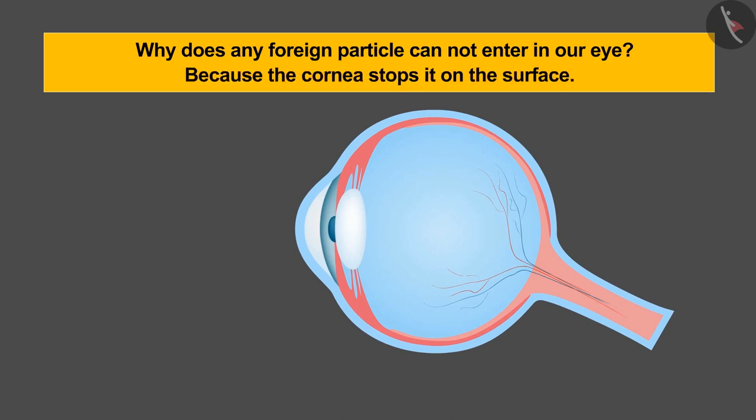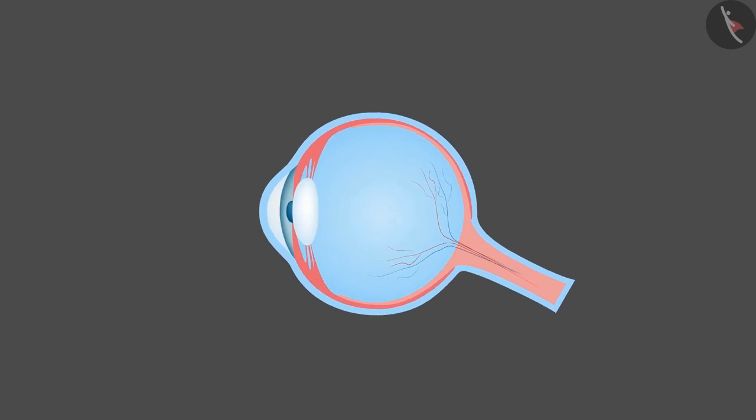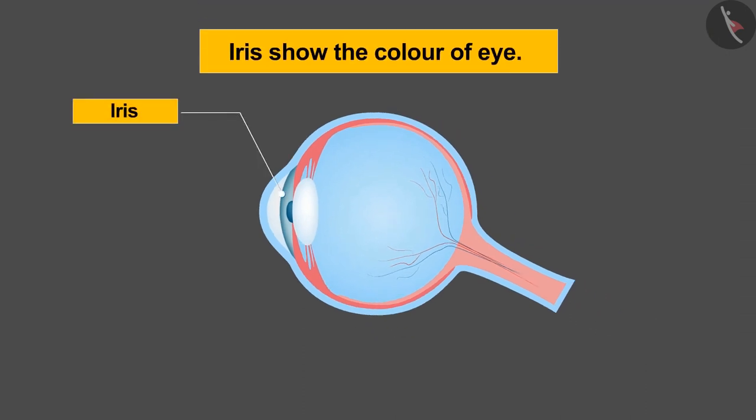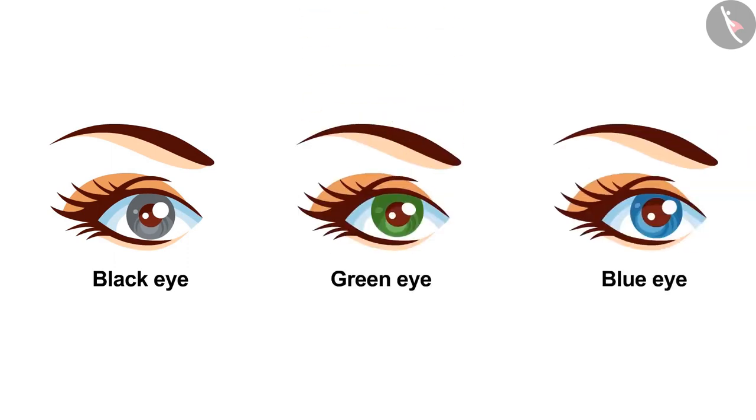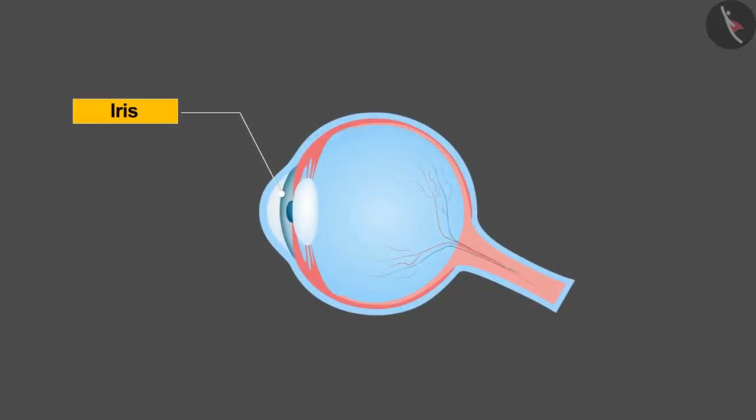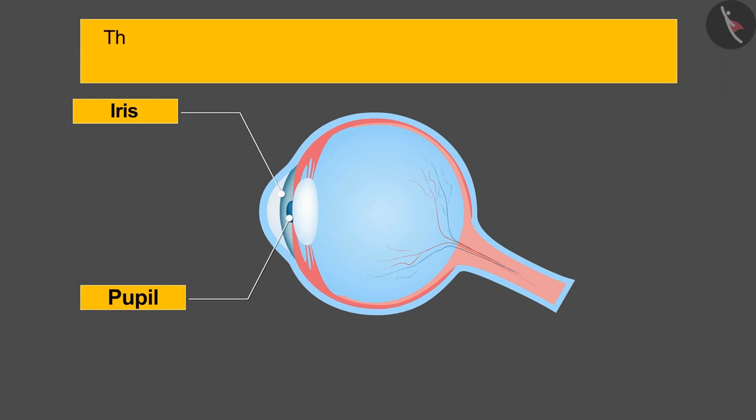After the cornea, the second part is known as the iris. You must have seen that someone's eyes are black, or someone's green, or someone's blue. They are actually the color of the iris. In addition, the iris also controls the size of the pupil. The pupil is the part of the eye that controls how much light should enter into our eyes.